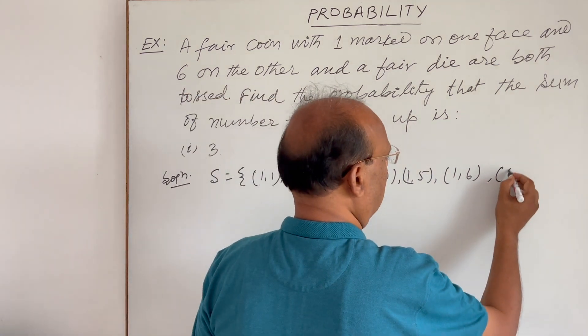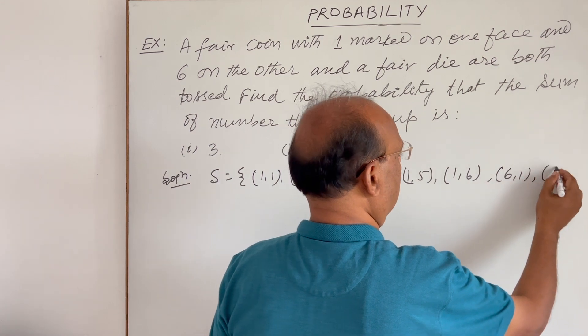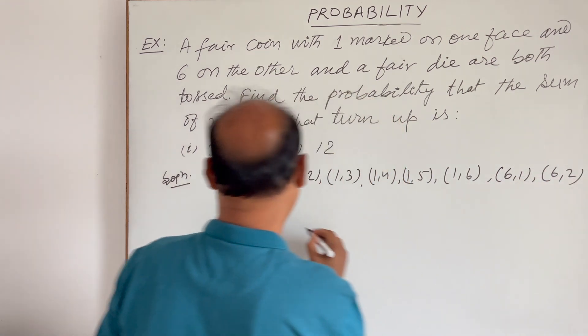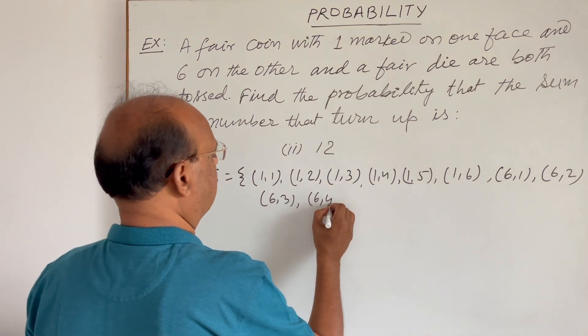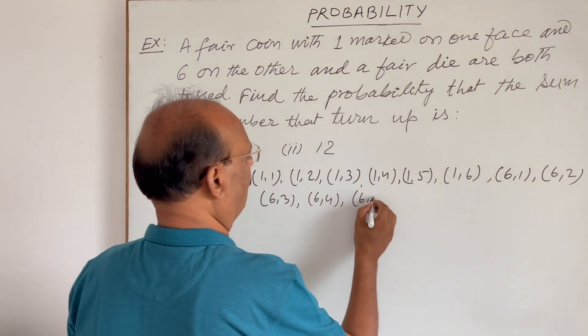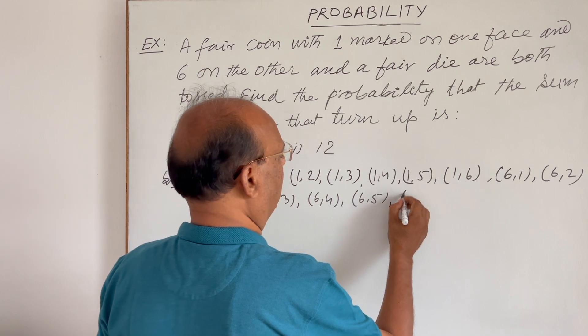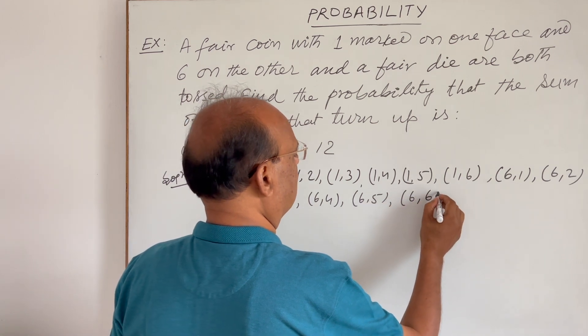So, this is six one, six two, six three, six four, six five, and six six.